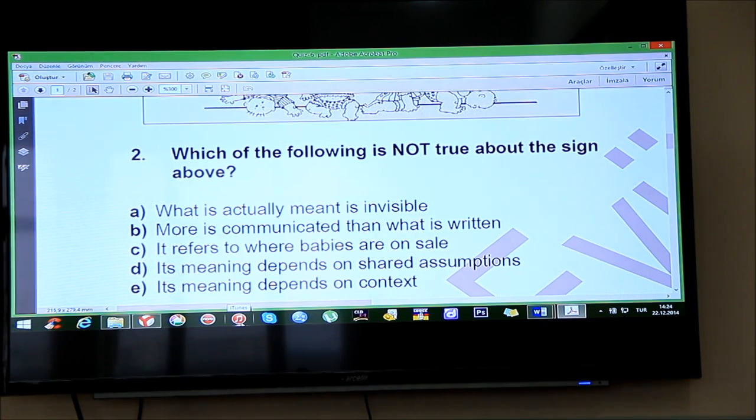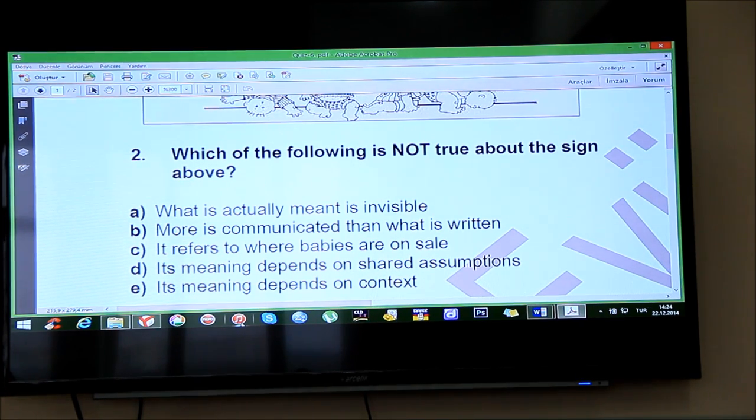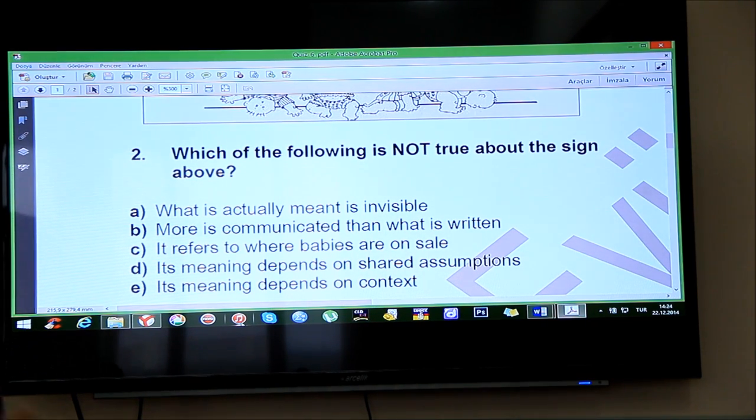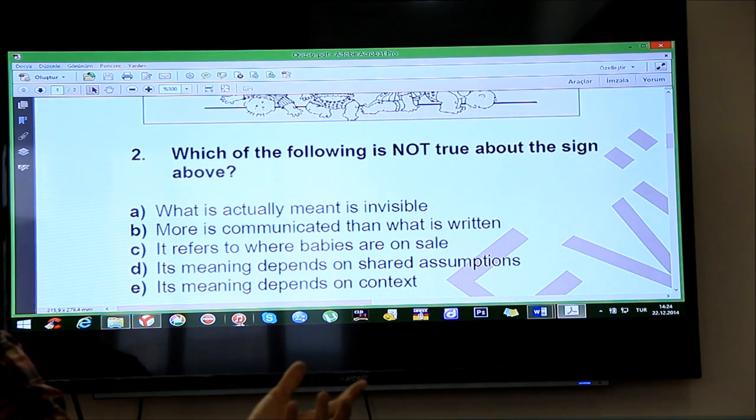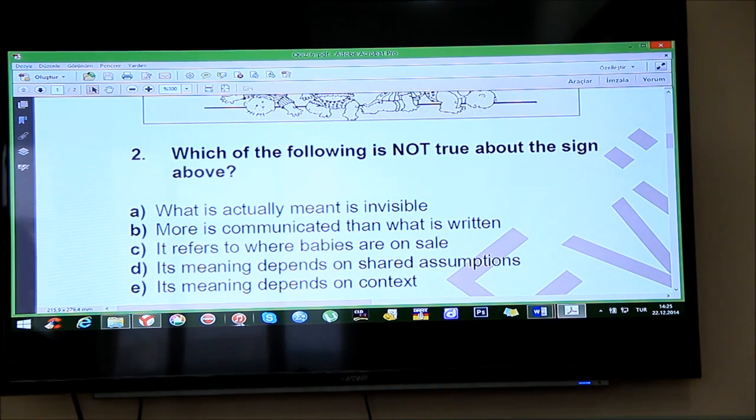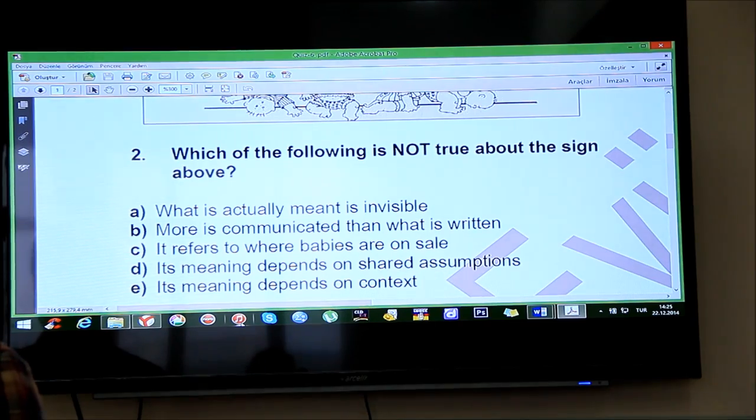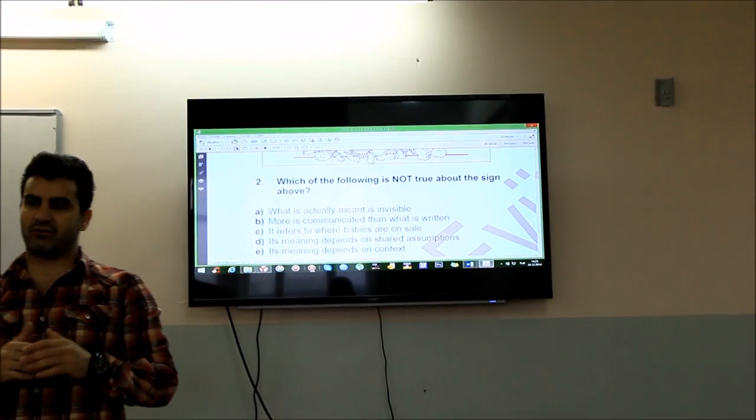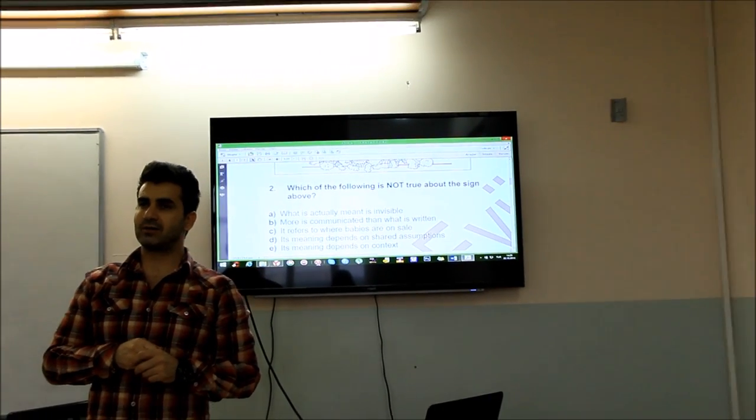Now, if you just analyze this in terms of syntax and semantics, you can come to a conclusion that they sell babies in that shop, right? Baby on sale. That means you sell babies and there is a discount on babies. You can buy one baby. Remember? When you were a child, you would ask your mom, Mom, how did I come to this world? And your mom would say, we bought you from Migros. So I remember, I asked this question frequently to my mom and I said, oh, so...